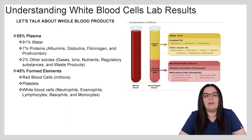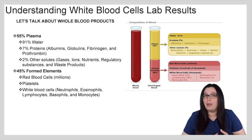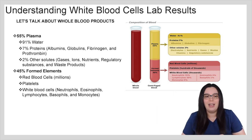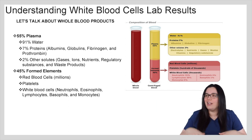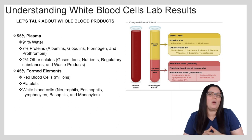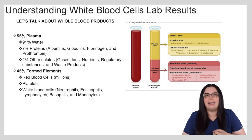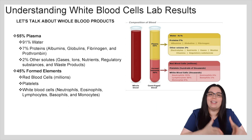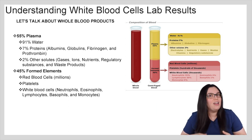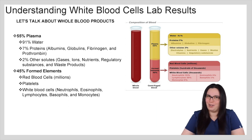Our plasma is made up of 91% water, 7% proteins — that includes our albumins, our globulins, fibrinogen, and prothrombin — and 2% other solutes: gases, ions, nutrients, regulatory substances, as well as waste products. Our formed elements are our red blood cells, which are usually in the millions, platelets, and our white blood cells, which can be further broken down into neutrophils, eosinophils, lymphocytes, basophils, and monocytes.